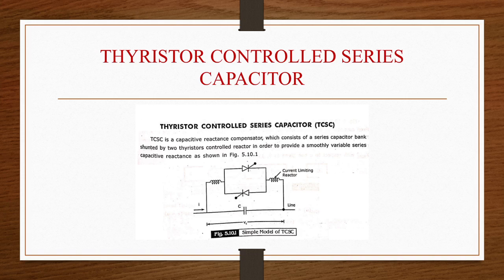SVC is classified as TCR, TSC, and TSR, which we have seen in detail. Now let us see about the thyristor-controlled series capacitor, TCSC. TCSC is a capacitive reactance compensation device which consists of a series capacitor bank with a thyristor-controlled reactor in order to provide a smoothly variable series capacitive reactance, as shown in the figure.